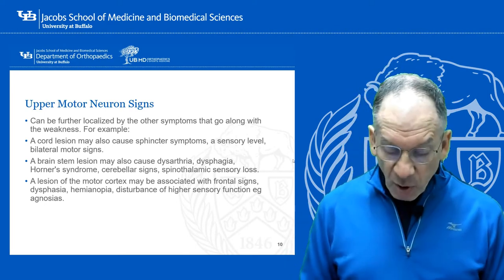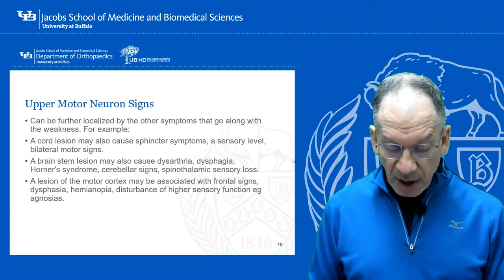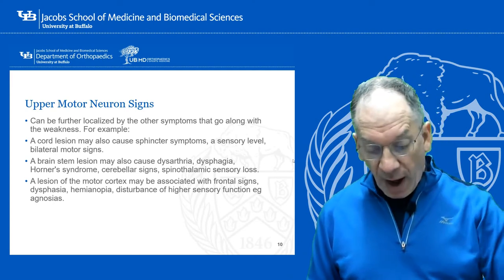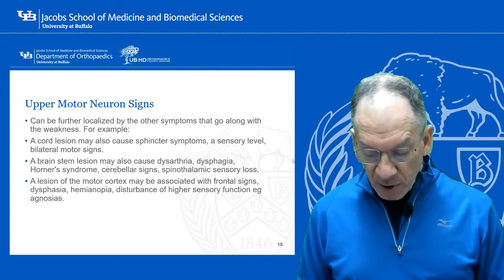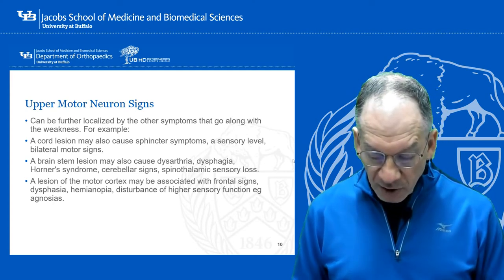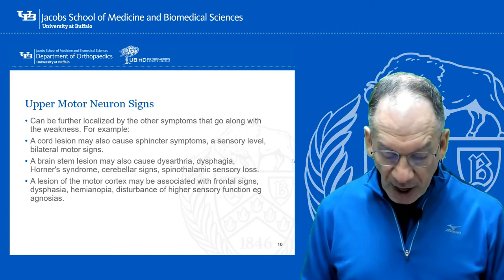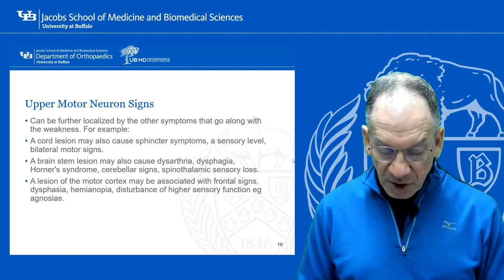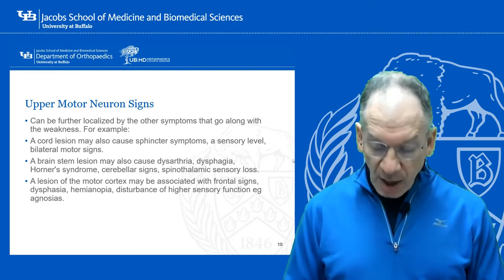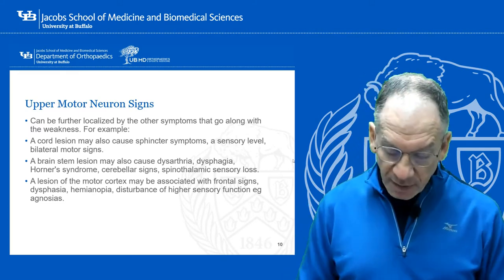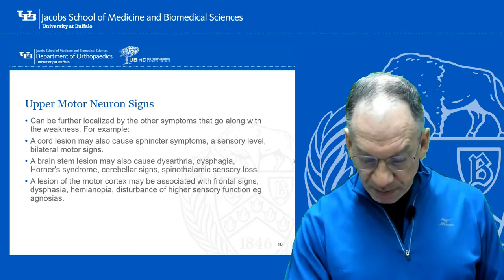A lesion of the motor cortex — as we go higher up to the brain — is associated with frontal signs: dysphagia, hemianopia, and disturbance of sensory function.